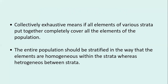Collectively exhaustive means that if I combine all the different strata together, they cover the entire population — those elements represent the whole population. In stratified random sampling, the population is divided such that elements within the strata are homogeneous — approximately the same — while elements outside or between different strata are heterogeneous. Elements within one group are similar to each other but differ from elements in other groups.